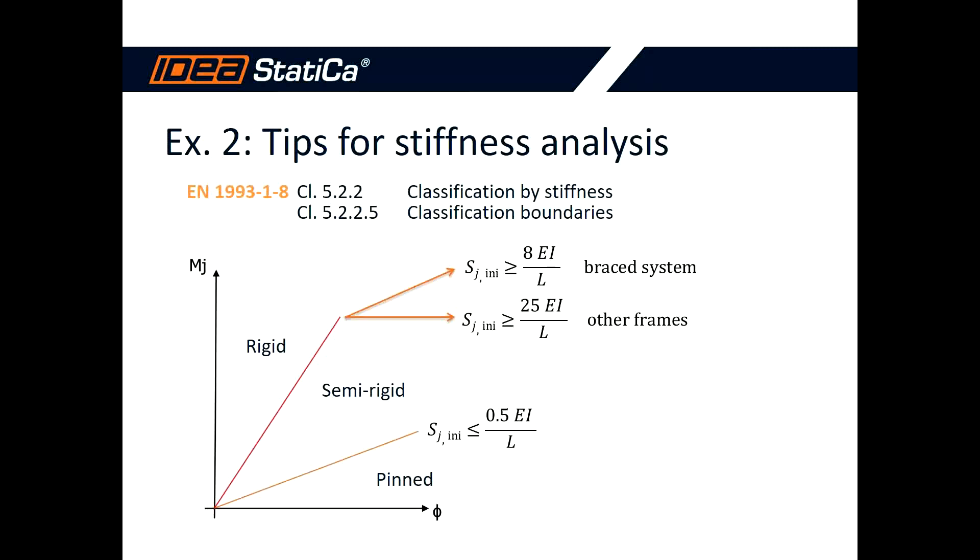The joint can be classified as pinned, semi-rigid, or rigid. How can we do that? The analysis gives us the dependence of joint rotation on bending moment, which is this green curve. The limit value of capacity of the connection is shown.